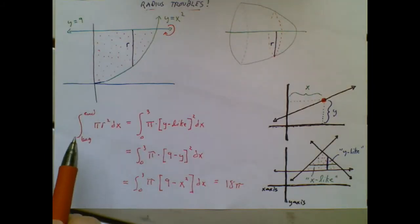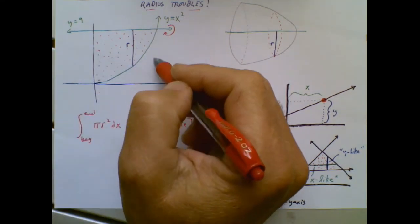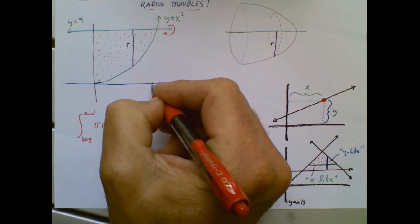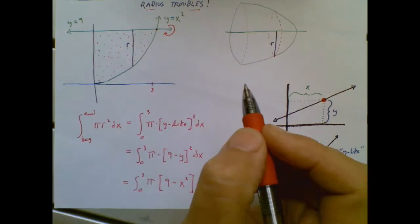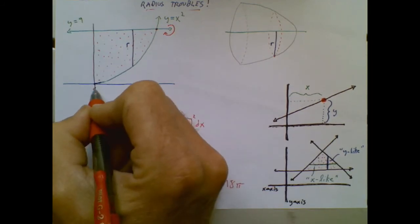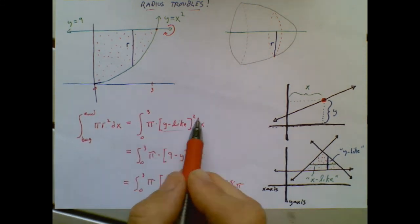Let's ignore that for a second. Beginning to end, pi r squared. Here's my first slice. There's my last slice. By doing a little algebra, I realize that that intersects at x equals three. My first slice happens at x equals zero. Pi r squared. But you notice I wrote y-like here.